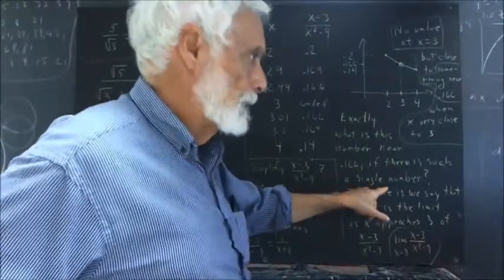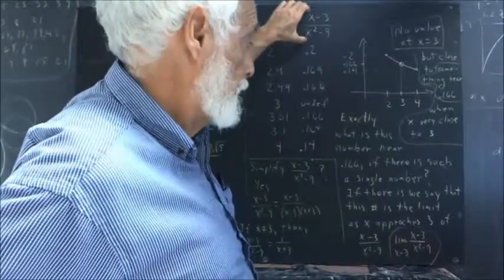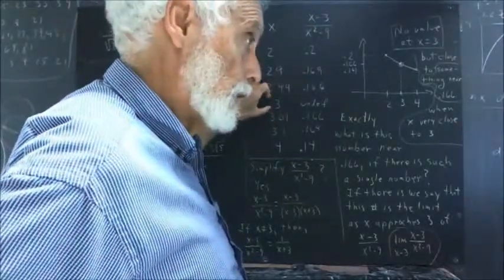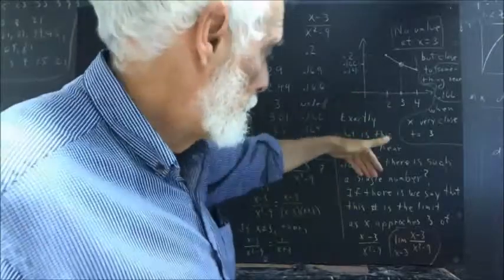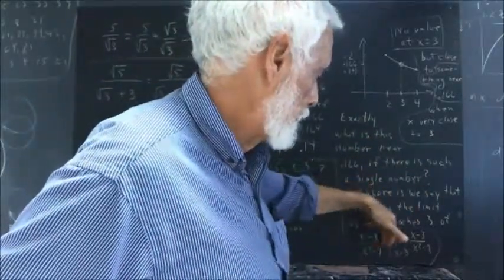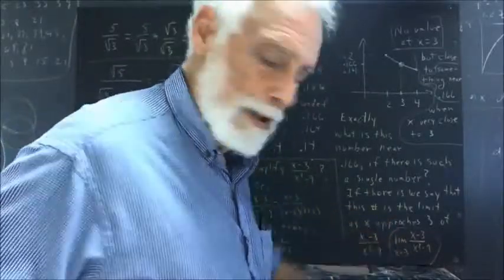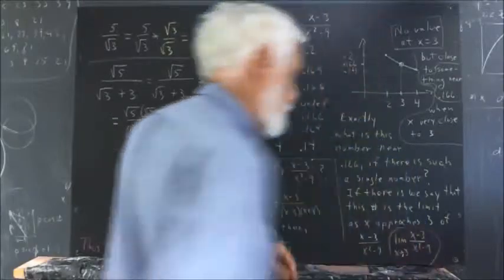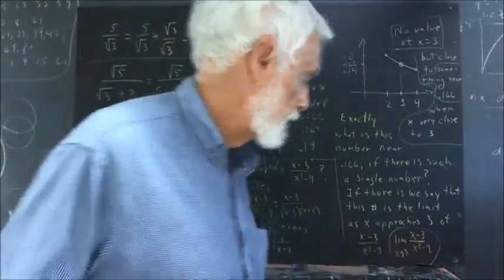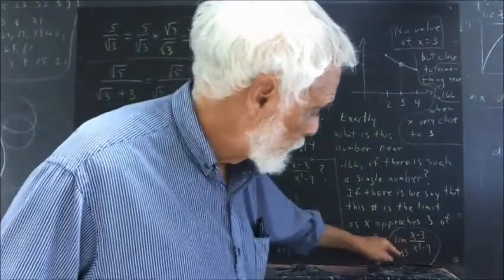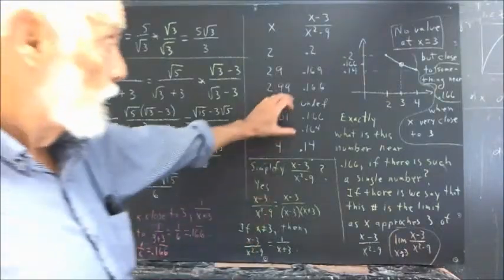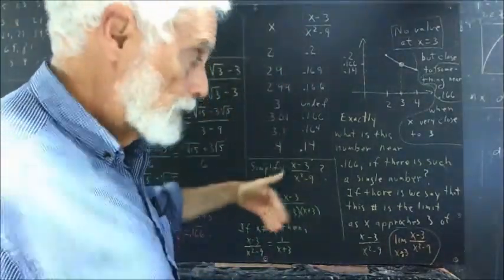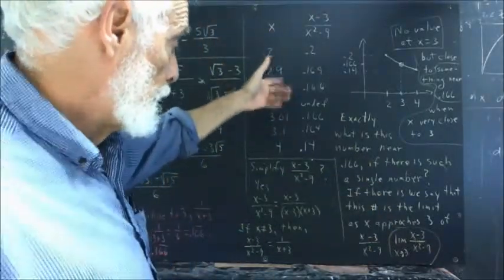And if we can find a single number that the value of this function approaches when x gets closer and closer to 3, we're going to call that the limit as x approaches 3 of x minus 3 over x squared minus 9. And we write that limit x—that's supposed to be an arrow—approaches 3 of x minus 3 over x squared minus 9. Again, it looks like there's a number somewhere around 0.166 that this function might approach as a limit. The values of this function might approach that value as a limiting value.